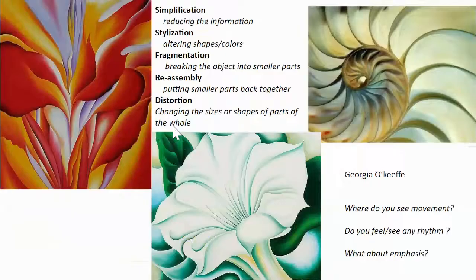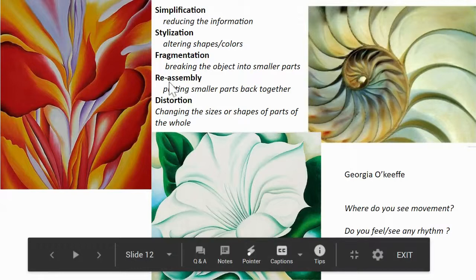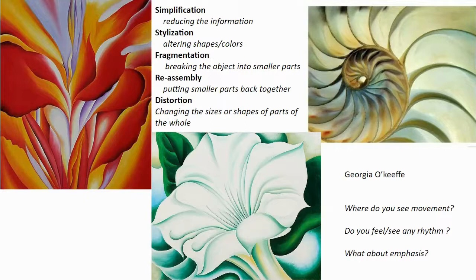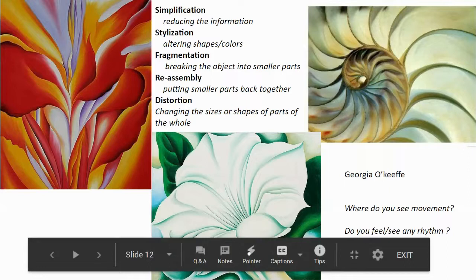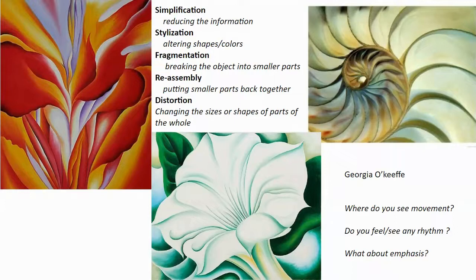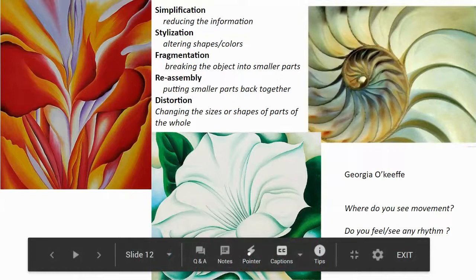Keeping in mind these five methods for abstraction — simplification, stylization, fragmentation, reassembly, and distortion — we want to take a moment and look at some artwork by famous American artist Georgia O'Keeffe, and we also want to keep in mind that as we are artists making artwork on a page, we want to figure out good ways to compose that page. We may remember hearing about principles of design — these are ideas about how artists arrange the stuff on their page. Each of these paintings is an abstraction that O'Keeffe made by zooming way in, by looking very closely at a real thing.